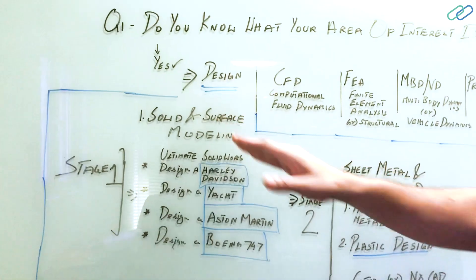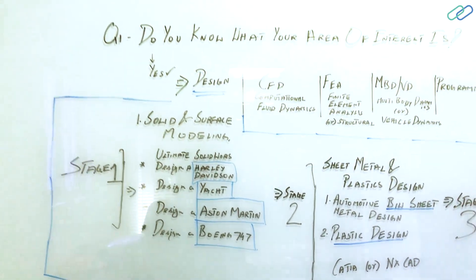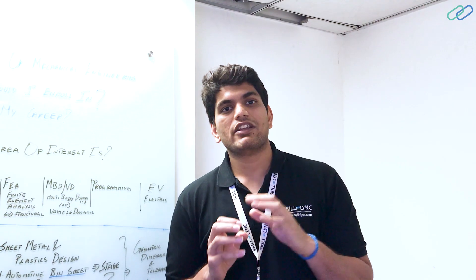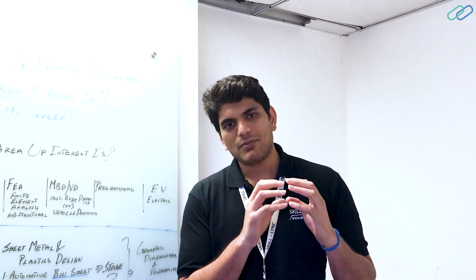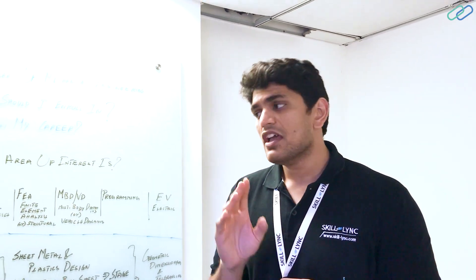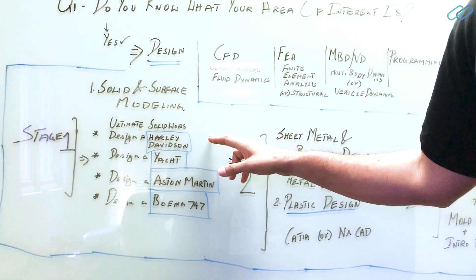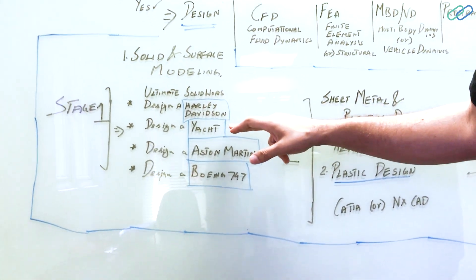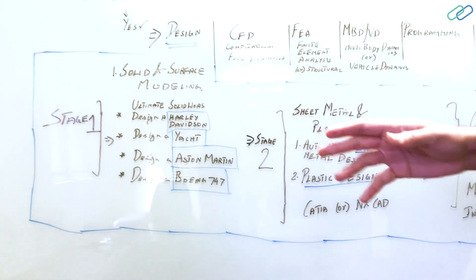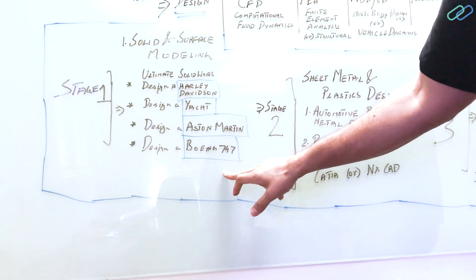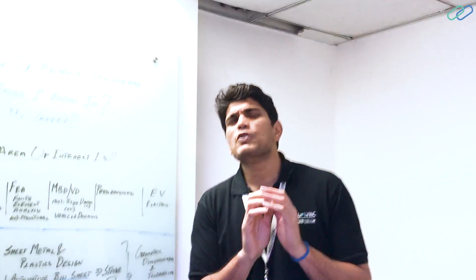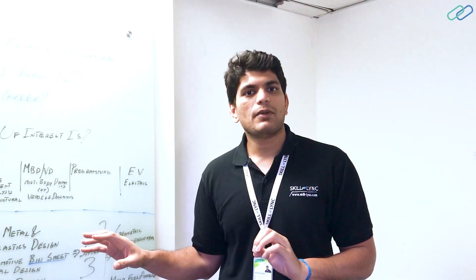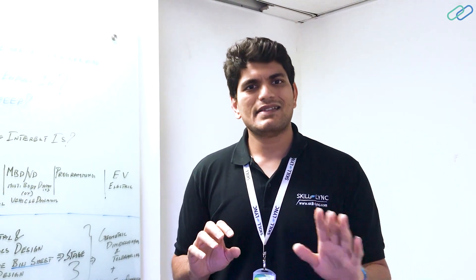Here you can use any software to basically learn solid and surface modeling. I wouldn't say there is one software that you need to learn because every software has pretty much the same principles. It's just the user interface is different. If you are learning up solid modeling in Skilllink, one of the things you can do is you can take up an ultimate solidworks course where you will design a Harley Davidson, or you can take a surface modeling course where you will design a yacht, or you can take up another surface modeling course where you would design an Aston Martin or a Boeing 747. Any of these four courses will give you a fundamental knowledge on design. You're a brand new fresher, you don't have any design experience, taking up any of these four courses will give you a very good stand on design engineering.